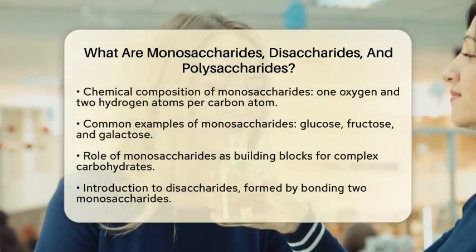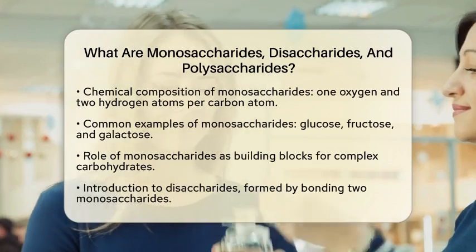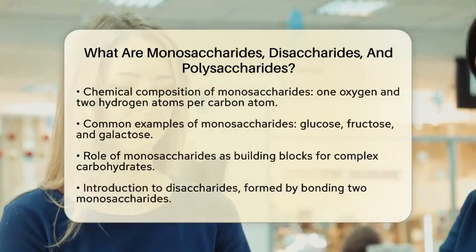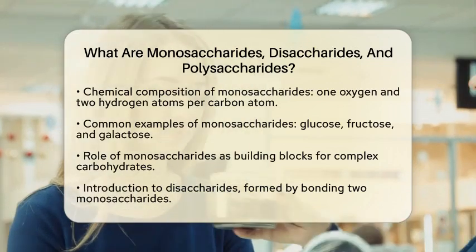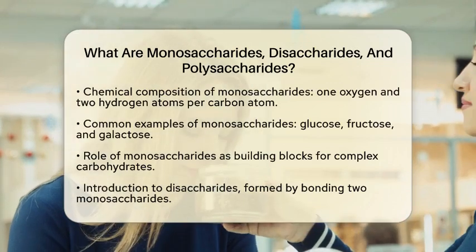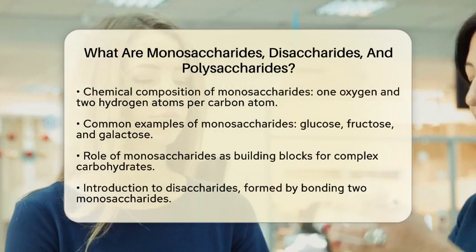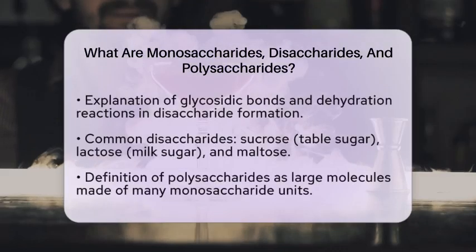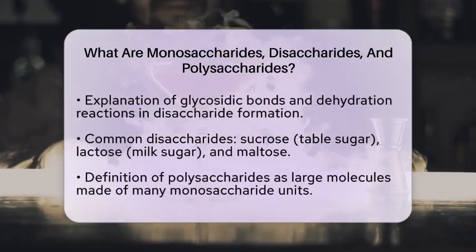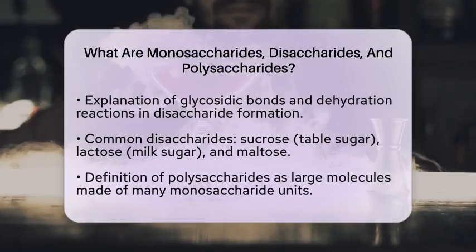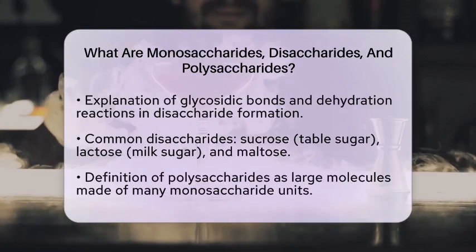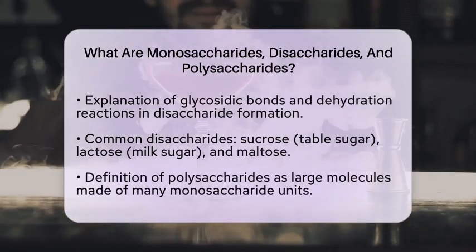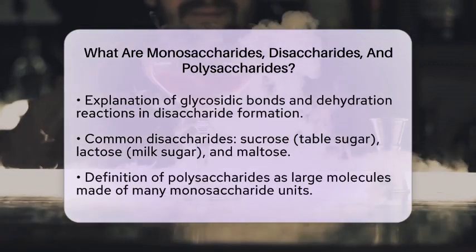Some common disaccharides include sucrose, which is table sugar made from glucose and fructose; lactose, the sugar found in milk made from glucose and galactose; and maltose, which is composed of two glucose molecules.